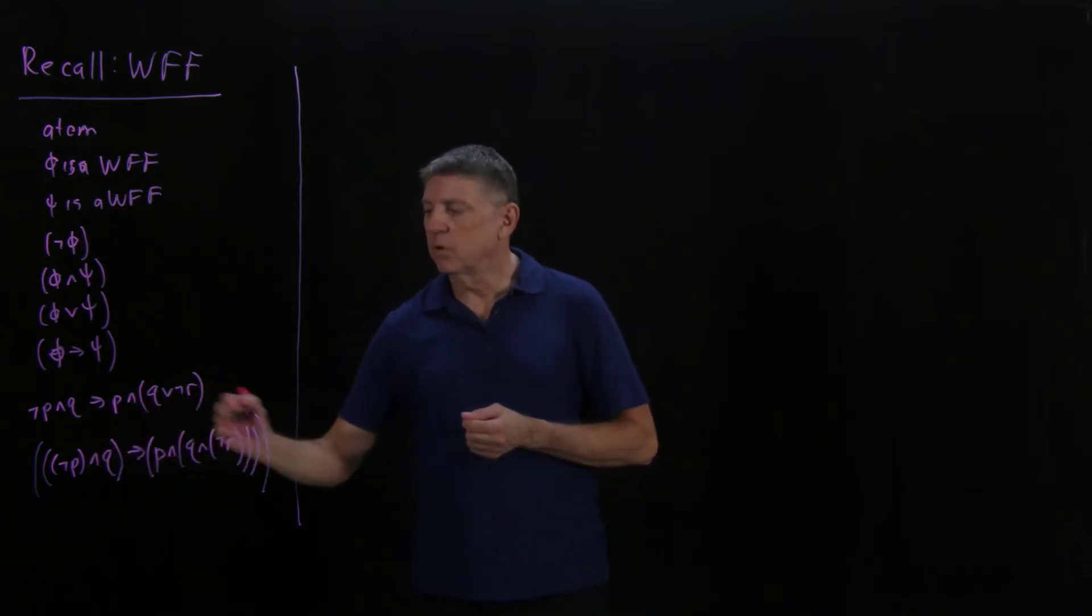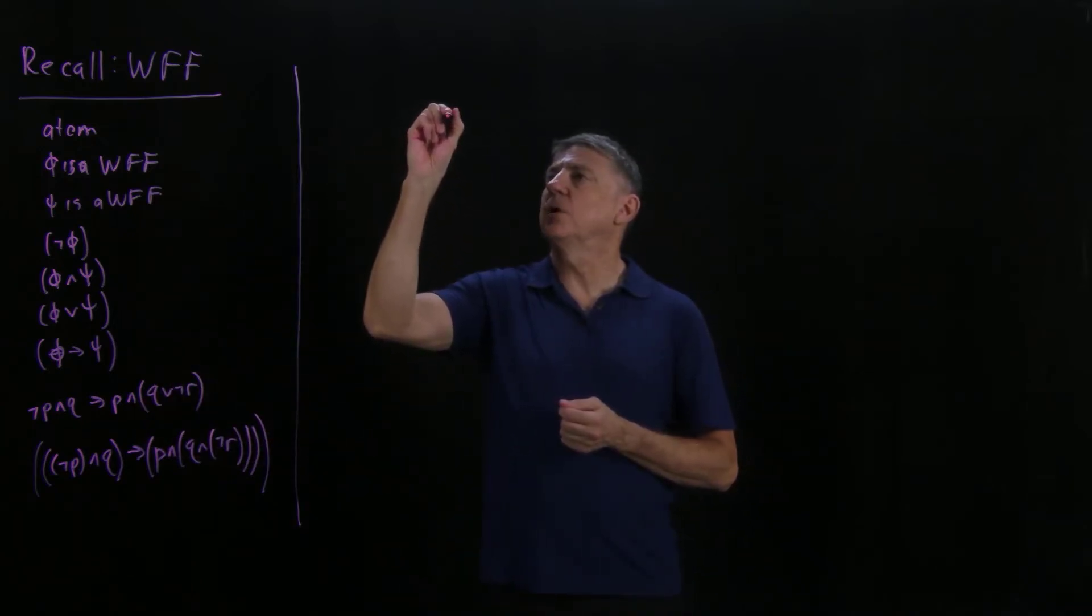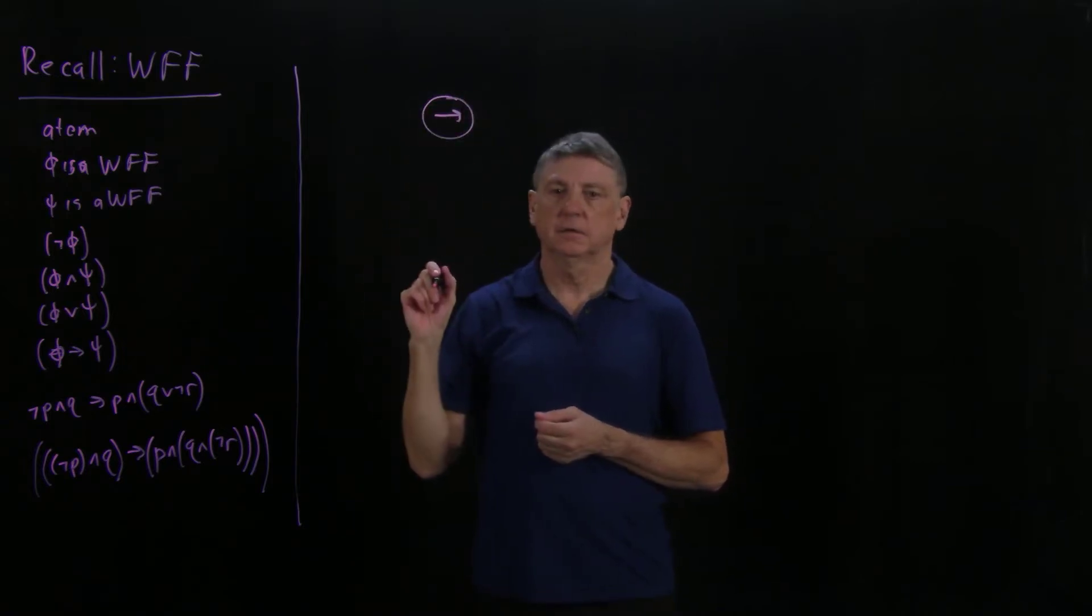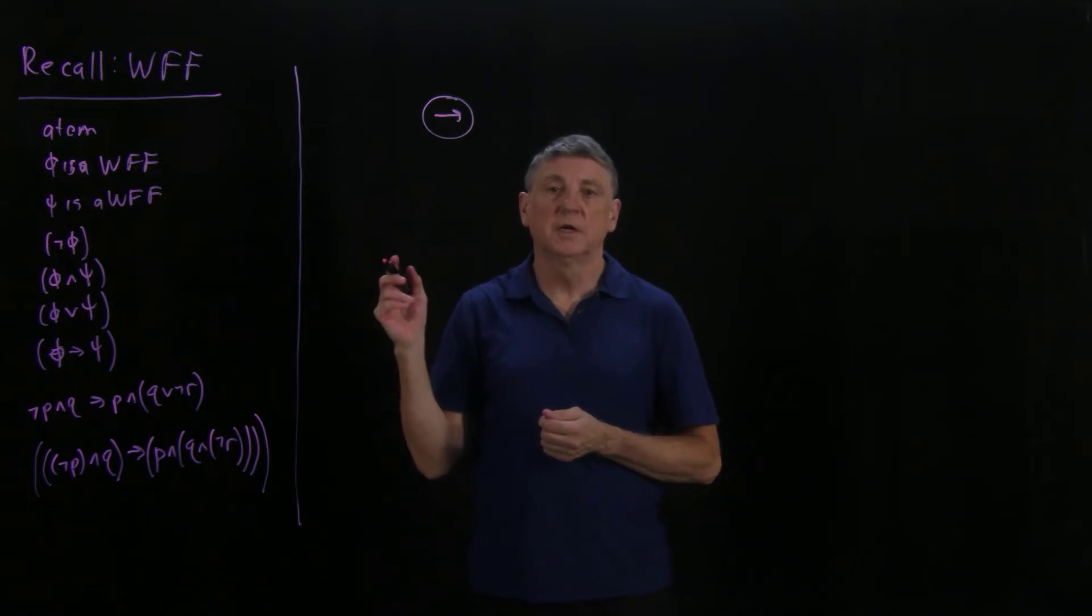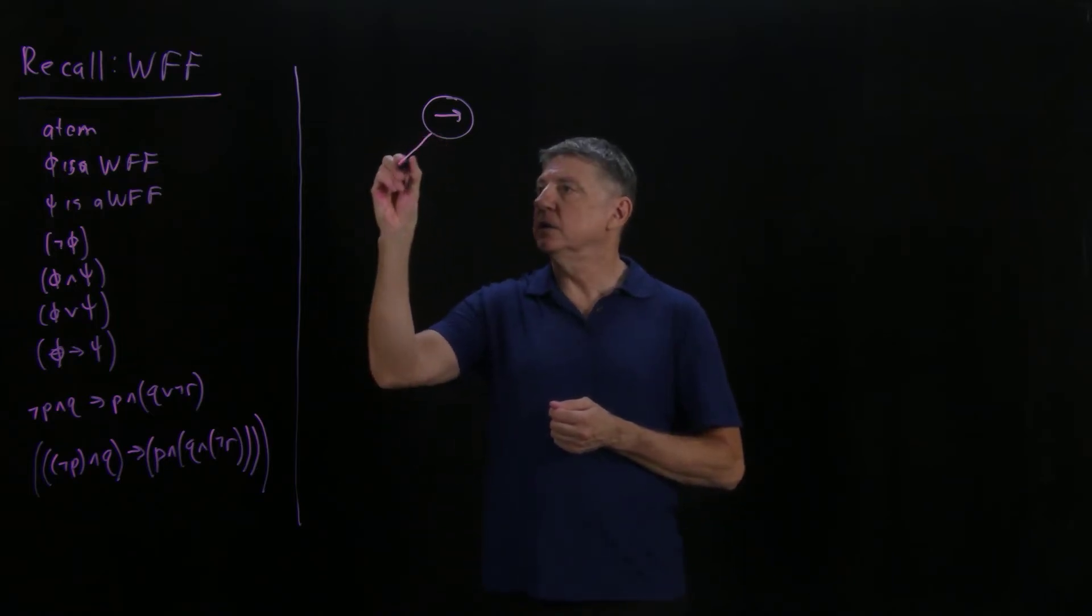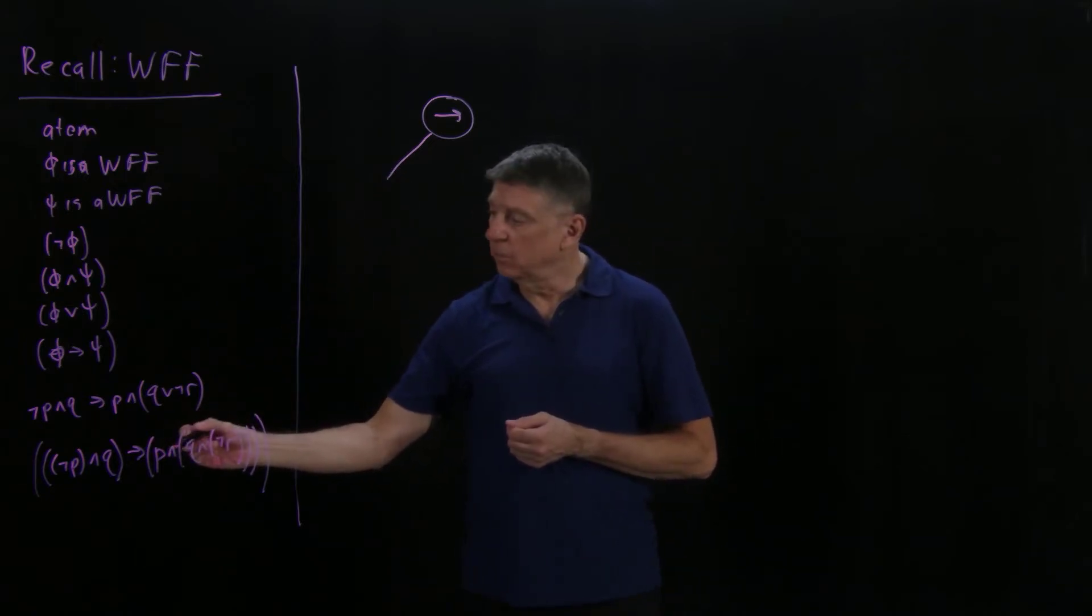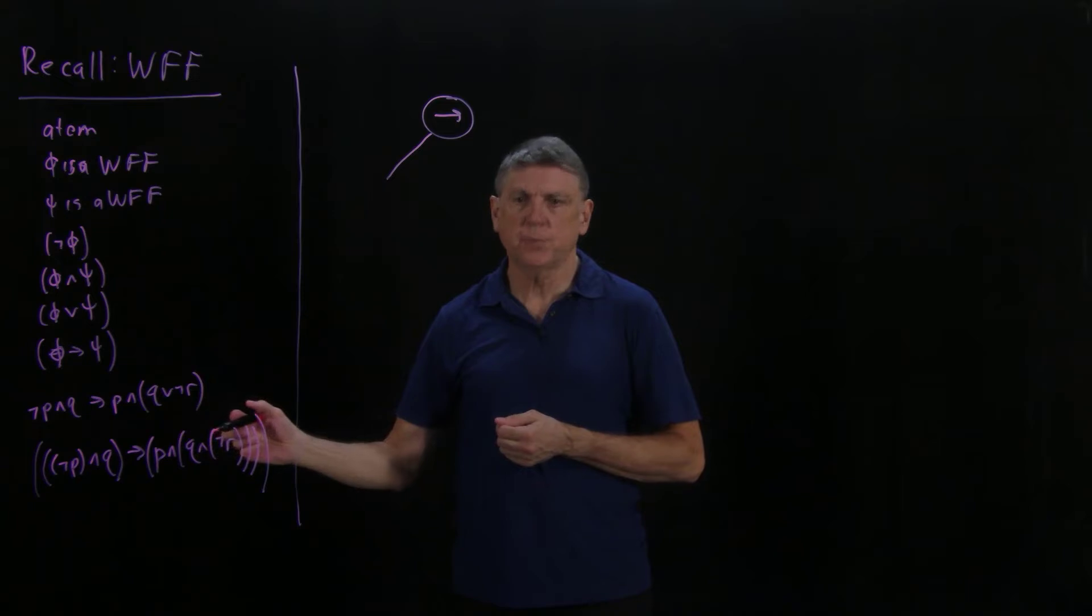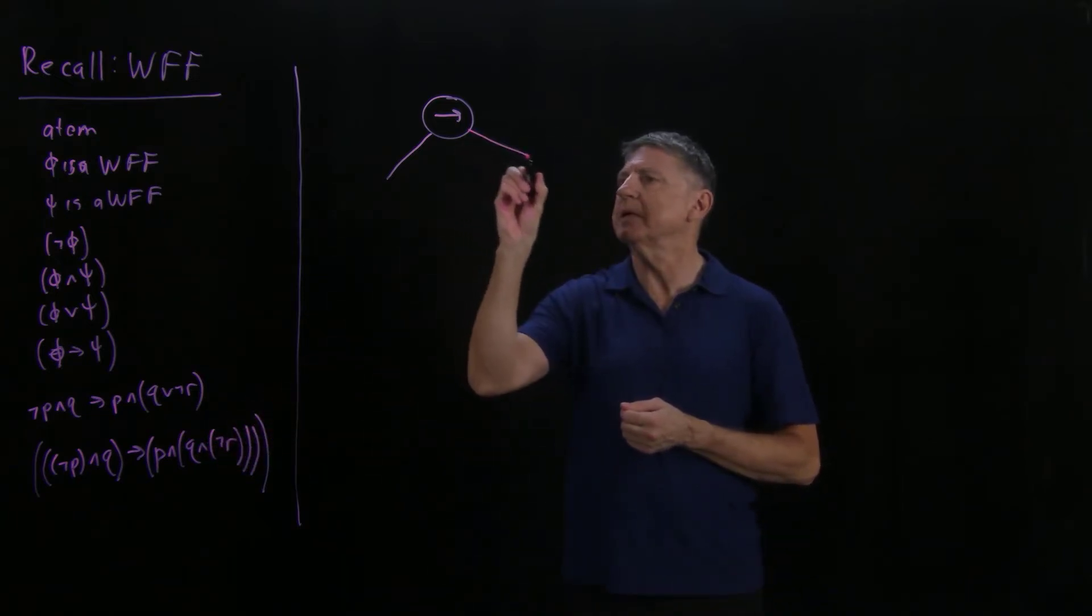Here the overall structure of this is implication, and to write its parse tree we would put down implication. There are two edges coming from this corresponding to the antecedent and the consequent. The antecedent will be here, and as a human, when I look at this, I see this is possibly going to require a little more space, so I'll leave a little more space.